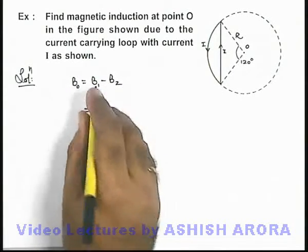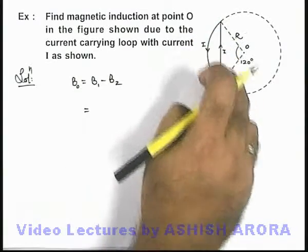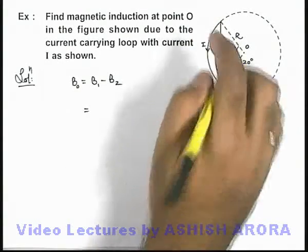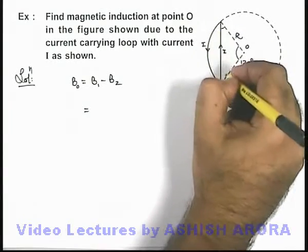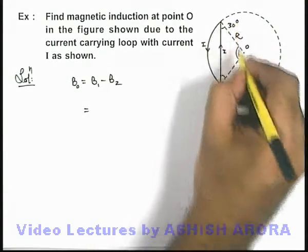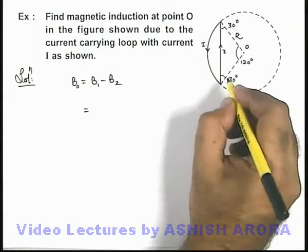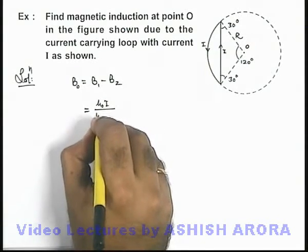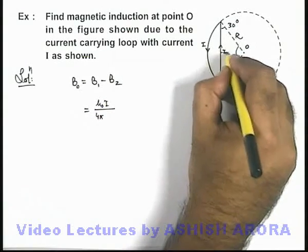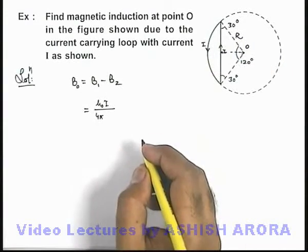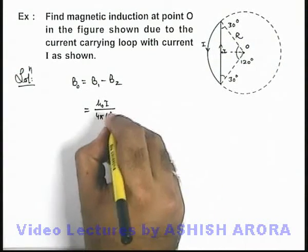Where this B1 we can write is the magnetic induction due to the straight wire, or it is a finite wire at which the two ends are subtending angles 30 degrees and 30 degrees at point O. So it can be directly written as μ₀I by 4π. The perpendicular distance we can write as r sin 30 degrees, that will be r by 2.